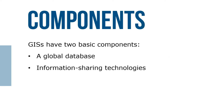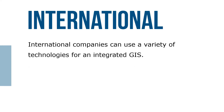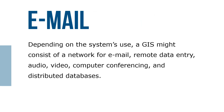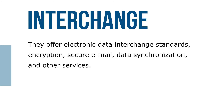GIS has two basic components: a global database and information sharing technologies. International companies can use a variety of technologies for integrated GIS. Depending on the system's use, a GIS might consist of a network for email, remote data entry, audio/video and computer conferencing, and distributed databases. They offer electronic data interchange standards, encryption, secure email, data synchronization, and other services.